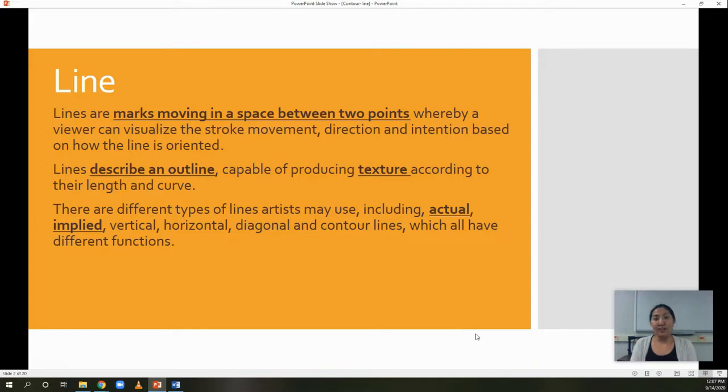And there are actually different types of lines that you will learn. It's an actual line where it's one point to the other where it's connected. We also have an implied line where we have broken lines that we link with our brain, and we have implied line, as the word says.